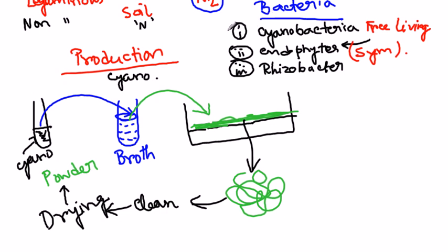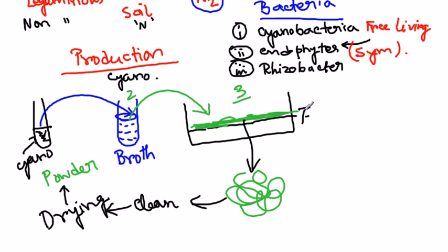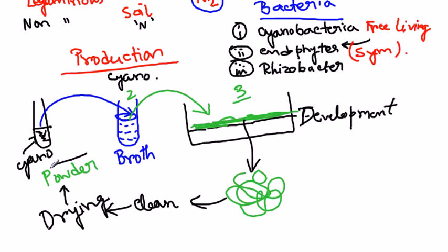To summarize the production steps: first, make the starter culture with the desired bacteria; second, transfer them into the broth; third, transfer into the giant fermenter where development of the bacteria occurs; then clean and sterilize the mat; dry it; make it into a powder; and serve this powder for use.